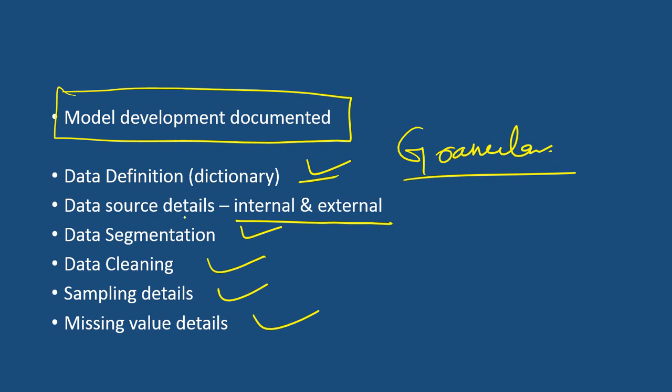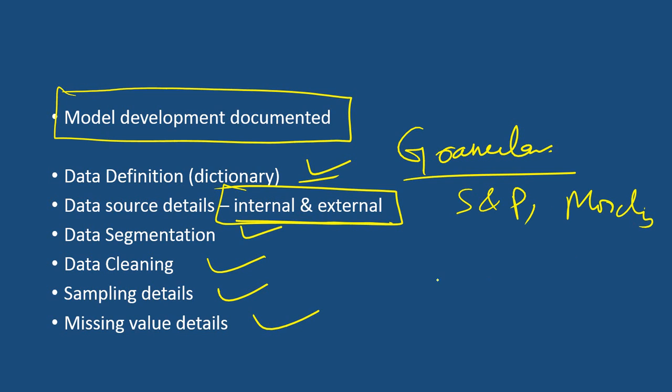Data source details should be well documented — whether the data is internal or external. If you are getting external data, you do not have control over it. External parties could be S&P, Moody's, or other rating agencies. One should ensure that the data source details are well checked, and any discrepancy or quality issue found in this data should be well documented.